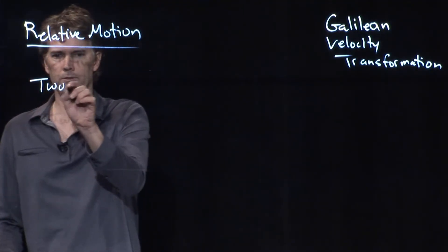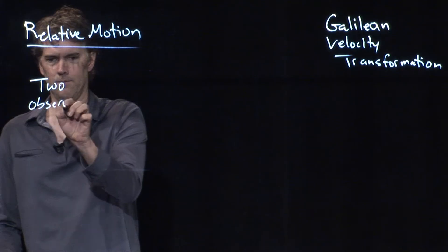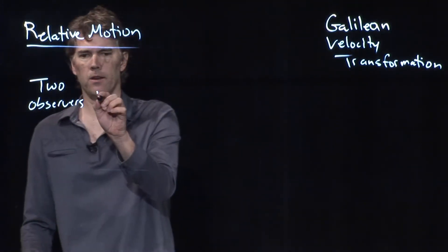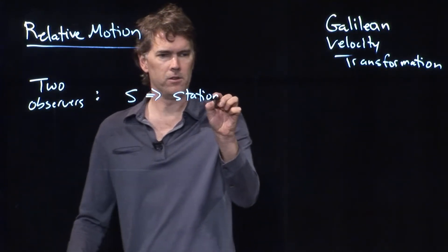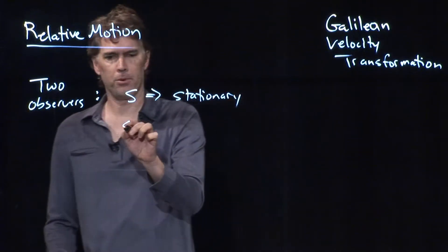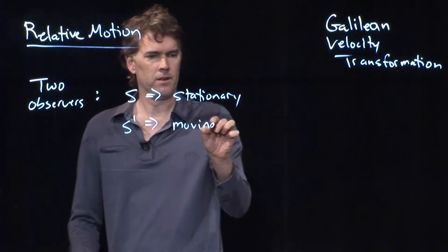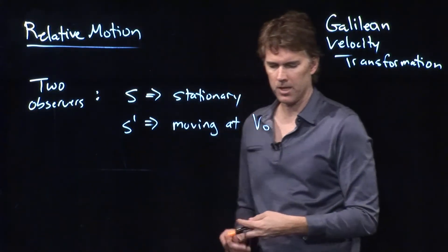Let's say we have two different observers. That could be like me and you. S is the stationary observer. That's you. S prime is the moving observer. That's me.